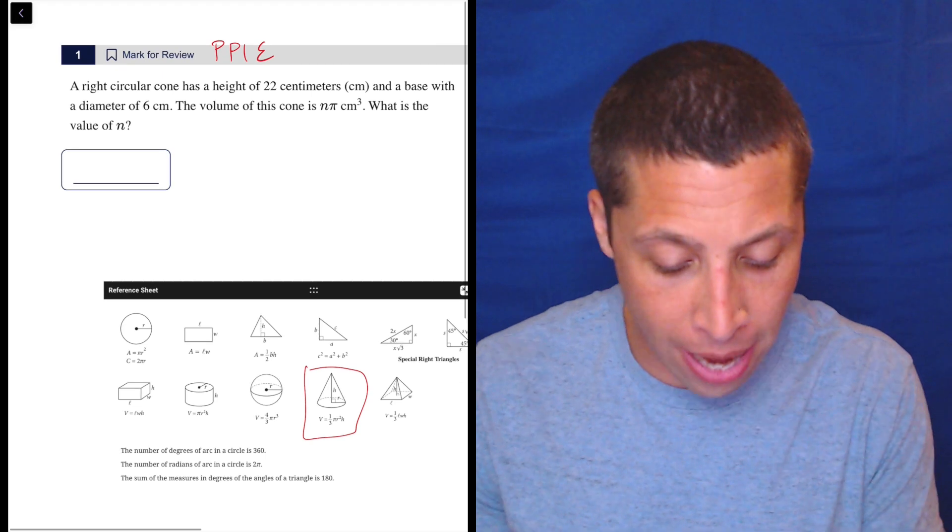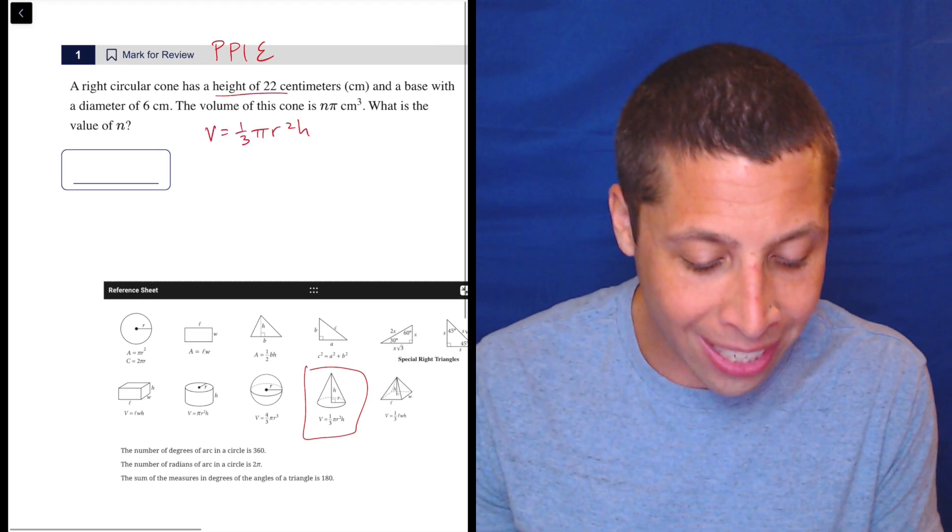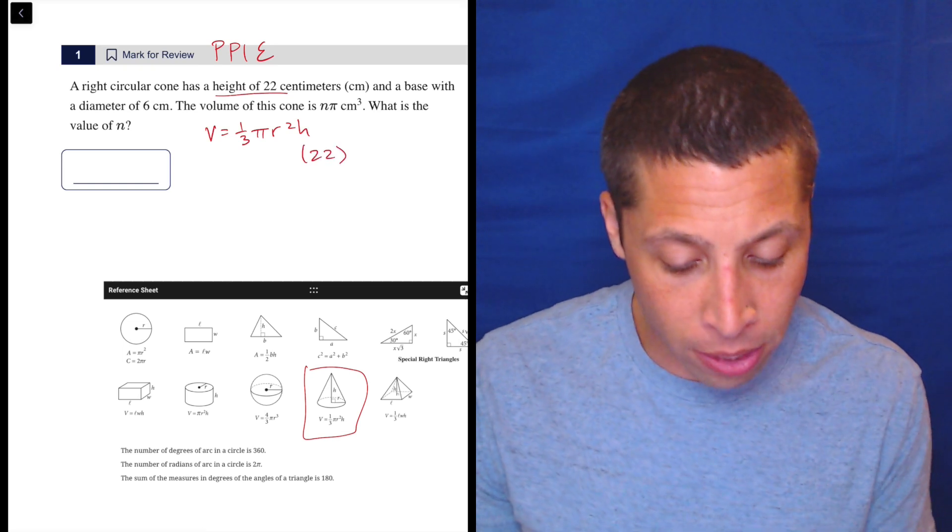Let's just put that down. Volume is one third pi r squared h. Well, they give us a height of 22. So let's pop that in. And oh,